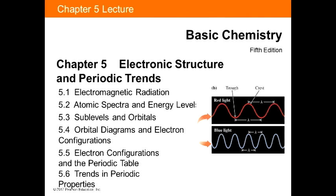Okay, chapter 5, Pearson — electronic structures and the periodic table. We'll cover electromagnetic radiation, atomic spectra, energy levels, sub-levels and orbitals, orbital diagrams, electronic configuration, the periodic table, and trends. That's a lot of stuff to cover here.